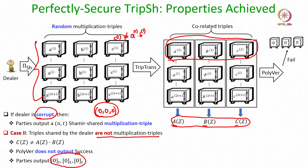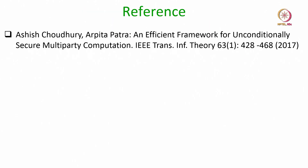That shows that all the claimed properties of the triple sharing protocol are achieved in a perfectly secure way, even in the presence of a computationally unbounded adversary and in an error-free fashion. With that I end this lecture; the reference for this lecture is the IEEE transactions paper. Thank you.